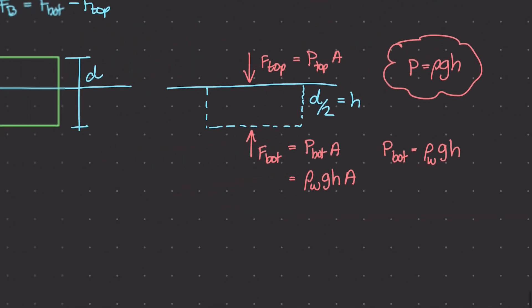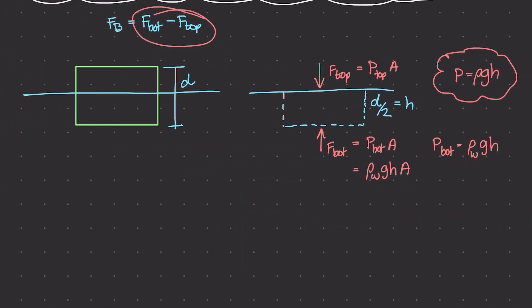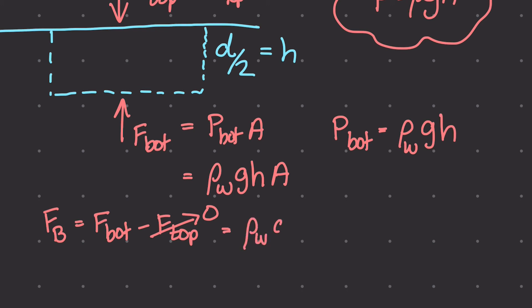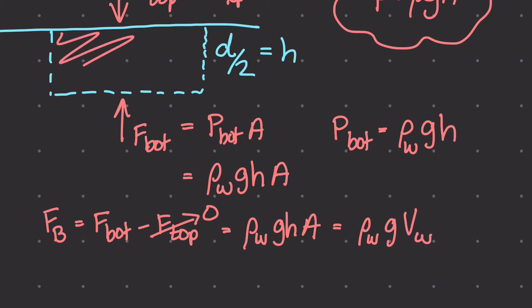Our buoyant force is equal to the difference between the force at the bottom and the force at the top. Since F top is equal to 0, this leaves us with: buoyant force equals rho times g times h times A. Now, h and A together give us volume — area times height equals volume. So I'm going to rewrite this as: mass density of water times g times the volume of the water that got displaced.